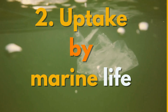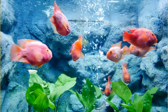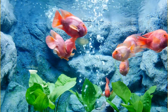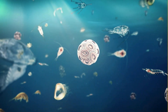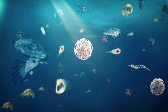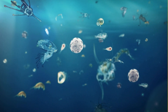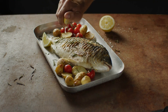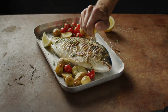Uptake by marine life: microplastics are ingested by marine organisms such as fish, shellfish, and plankton, mistaking them for food. These particles can accumulate in the tissues of seafood, which is then consumed by humans.